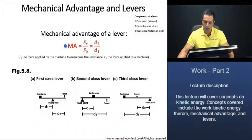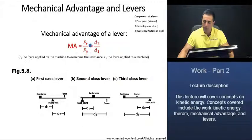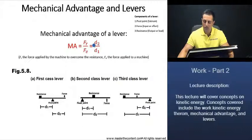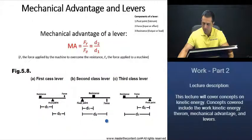The mechanical advantage of a lever is just the force applied by the machine to overcome the resistance, divided by the effort force, or the force applied to a machine. That is going to be equivalent to D₂ over D₁, where D₂ is the distance of the effort force relative to the pivot point, divided by D₁, the distance of the resistance relative to the pivot point. We're going to see that in all classes of levers.